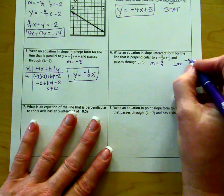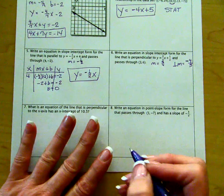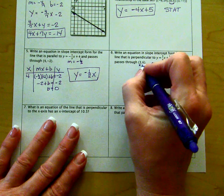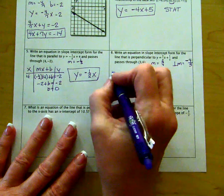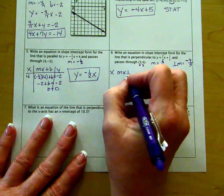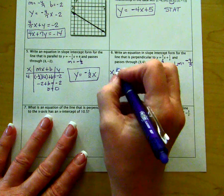So we would take negative four over three for our slope, and it's going to pass through the point (3, 6). Again, we will use the extended table.